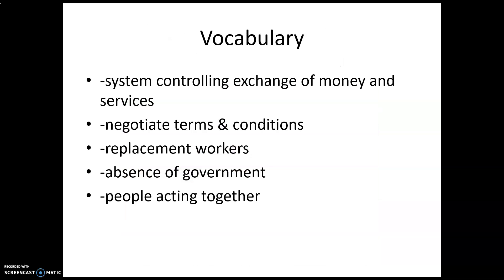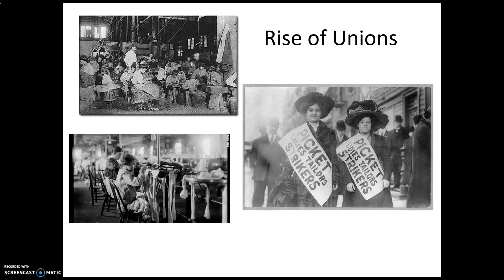Starting with some vocabulary, this outline covers five areas: the purpose of unions, the tactics unions used, early examples of unions, four key examples of strikes, and opposition to unions.